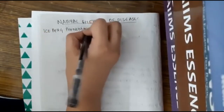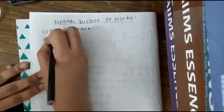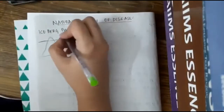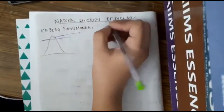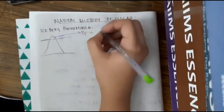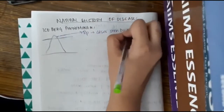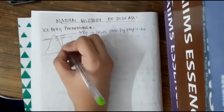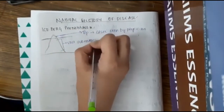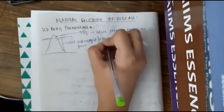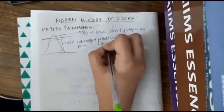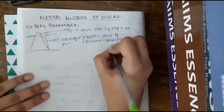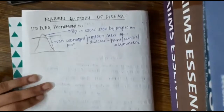In the natural history of disease, first we have the iceberg phenomenon. If this is the iceberg and that is the sea level, then the tip of the iceberg includes the cases which are seen by the physician, whereas the vast submerged portion represents the cases which are hidden — the hidden cases of disease.